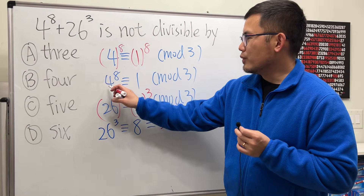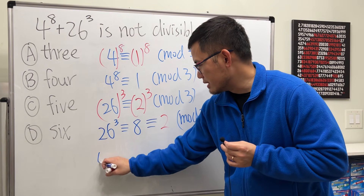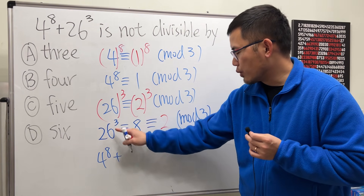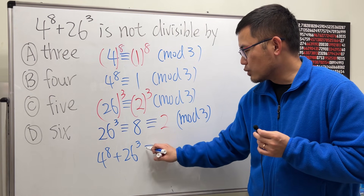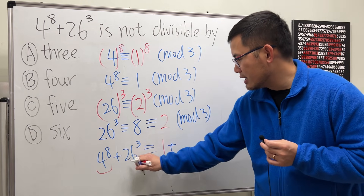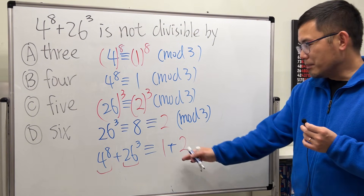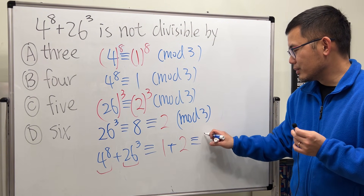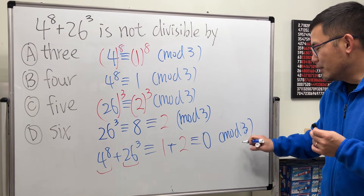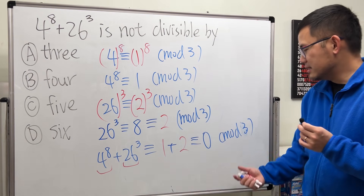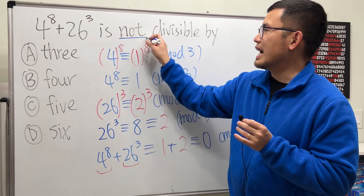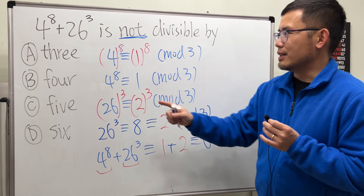So now, combining the results: 4 to the 8th is congruent to 1 mod 3, and 26 to the 3rd is congruent to 2 mod 3. So 4 to the 8th plus 26 to the 3rd is congruent to 1 plus 2, which is 3. But 3 is congruent to 0 mod 3. A result of 0 means the number is divisible by 3. Since we're looking for which number it's NOT divisible by, 3 is not the answer.